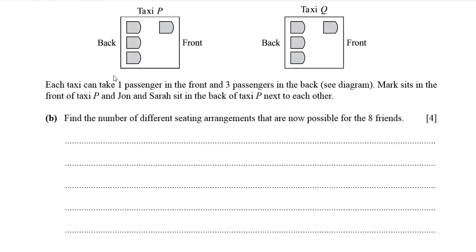Now let's discuss part b. We have a new situation: taxi P and taxi Q each take one passenger in the front and three passengers in the back. From the diagram, Mark sits in the front of taxi P, so that position is filled. John and Sarah sit in the back of taxi P next to each other, so they can sit in either of two adjacent positions — this can be done in two ways.